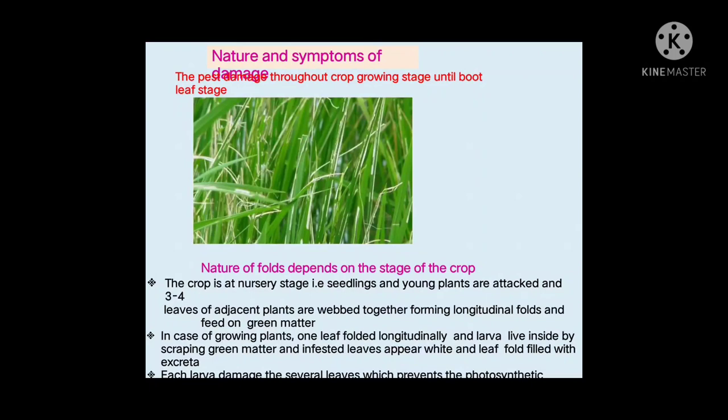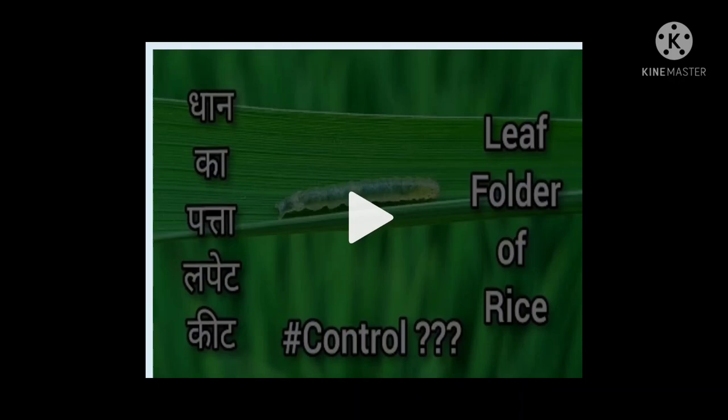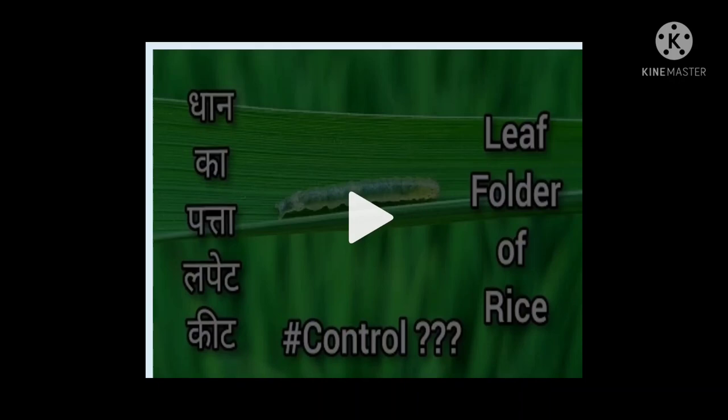In both paddy case worm and leaf folder, the larvae scrape the green matter and white patches form — but there is a difference. The leaf folder folds the complete leaf longitudinally, whereas the case worm first cuts bits of leaf at a right angle, forms a leaf case, then stays inside it. Leaf folder scraping removes all chlorophyll, thus preventing photosynthesis.